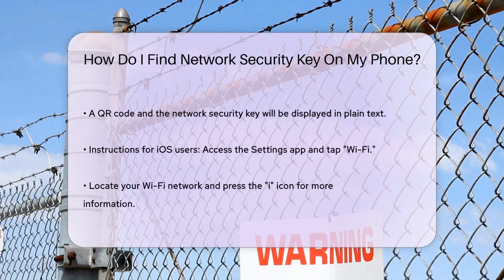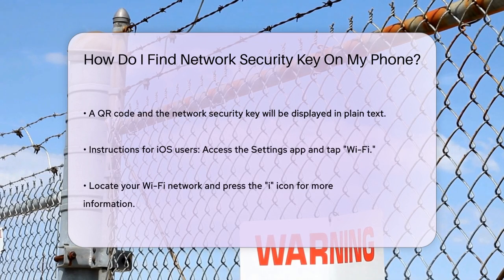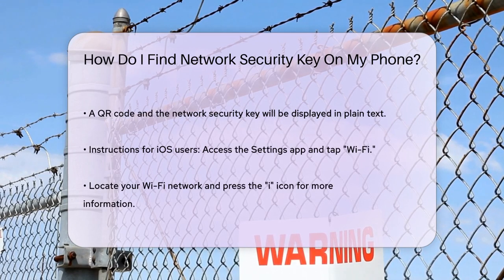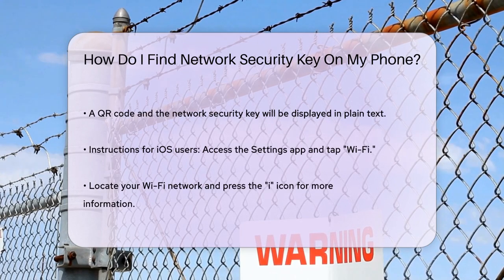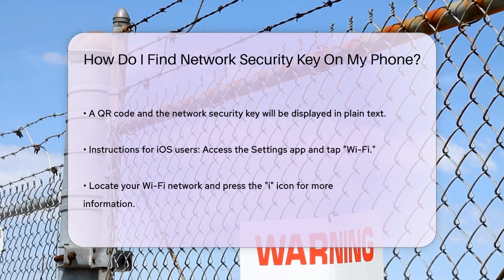For iOS users, the process is a bit different. Go to your Settings app and tap on Wi-Fi. Find your Wi-Fi network and press the eye icon next to it. Then tap on the Password option. You'll need to use Face ID or Touch ID to authenticate, and once you do, the password will be displayed in plain text.